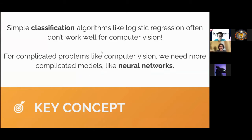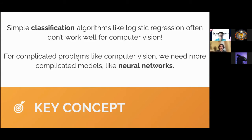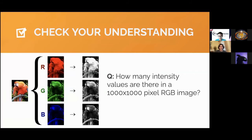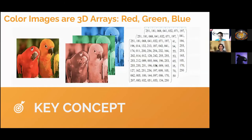Even simple classification or logistic regression wouldn't work here. Images are just too complex — especially now that we know how they're represented as numbers. Instead of picturing this image, picture a huge matrix of numbers and try to write code that recognizes things from that — because that's what the computer actually sees.